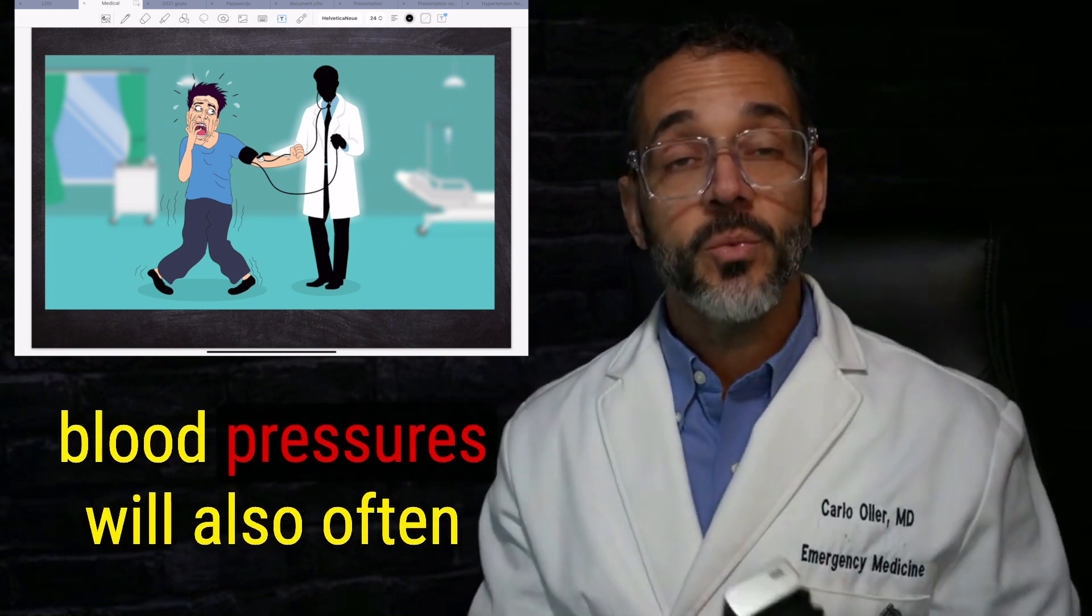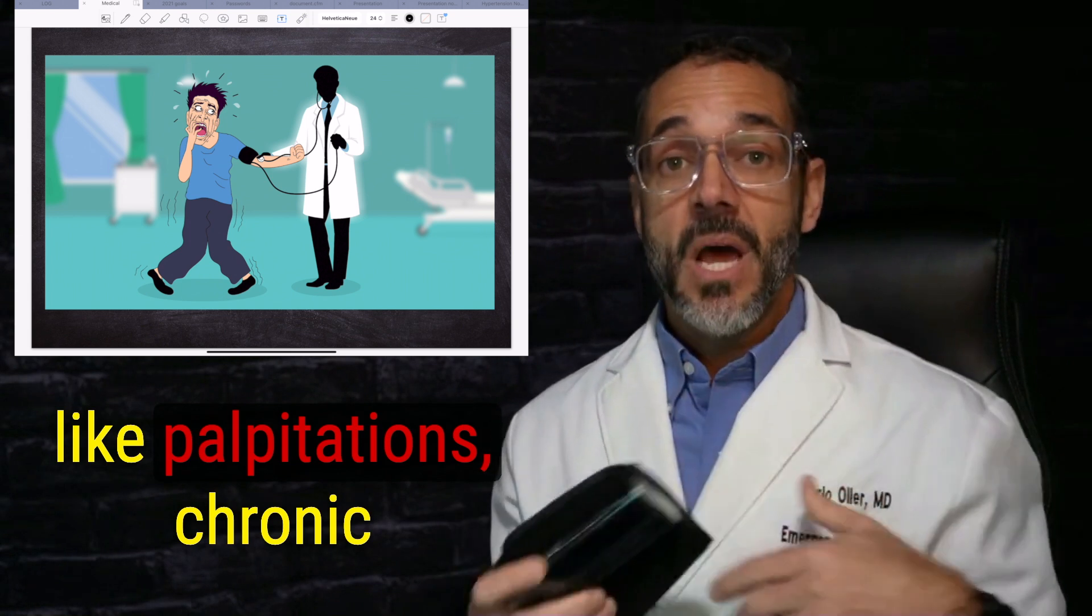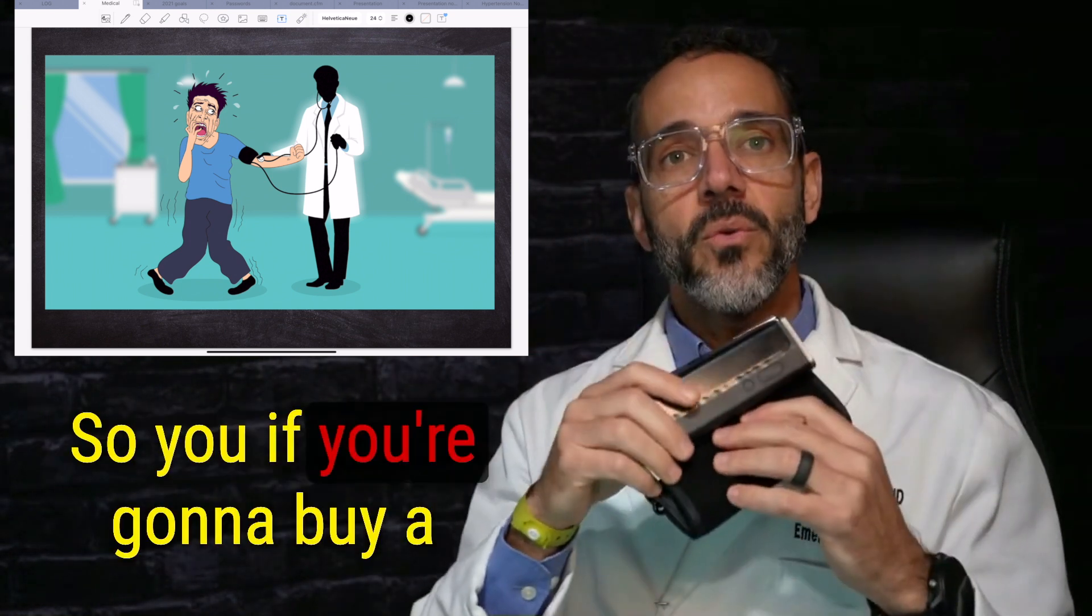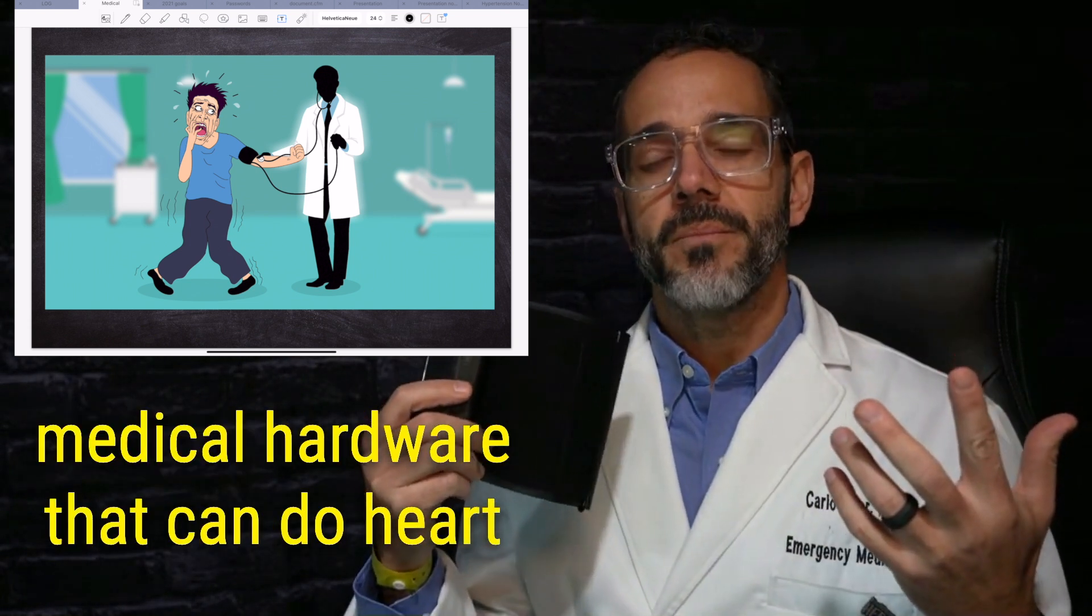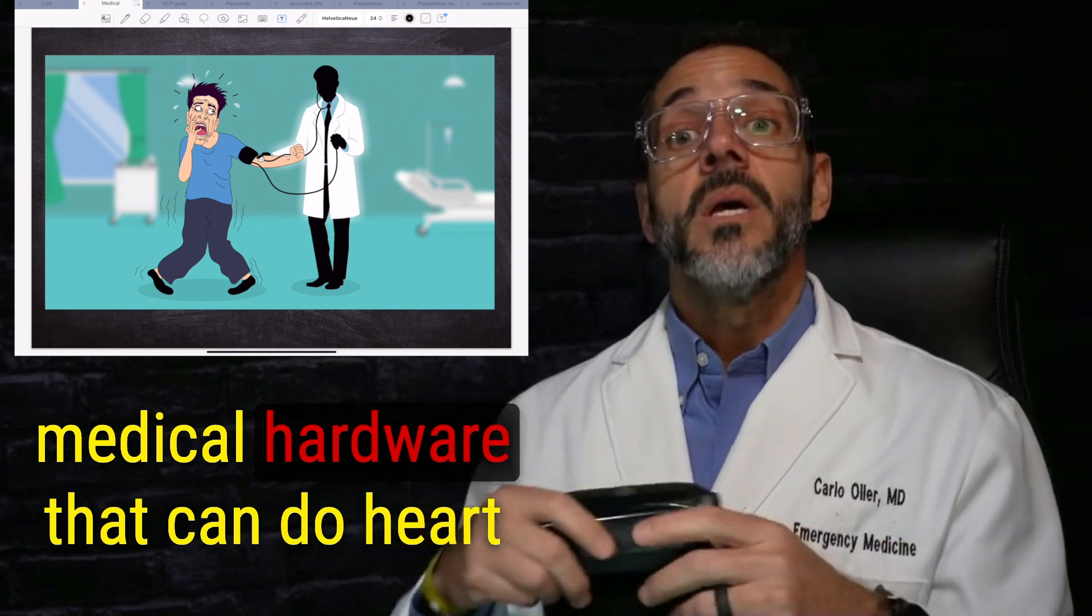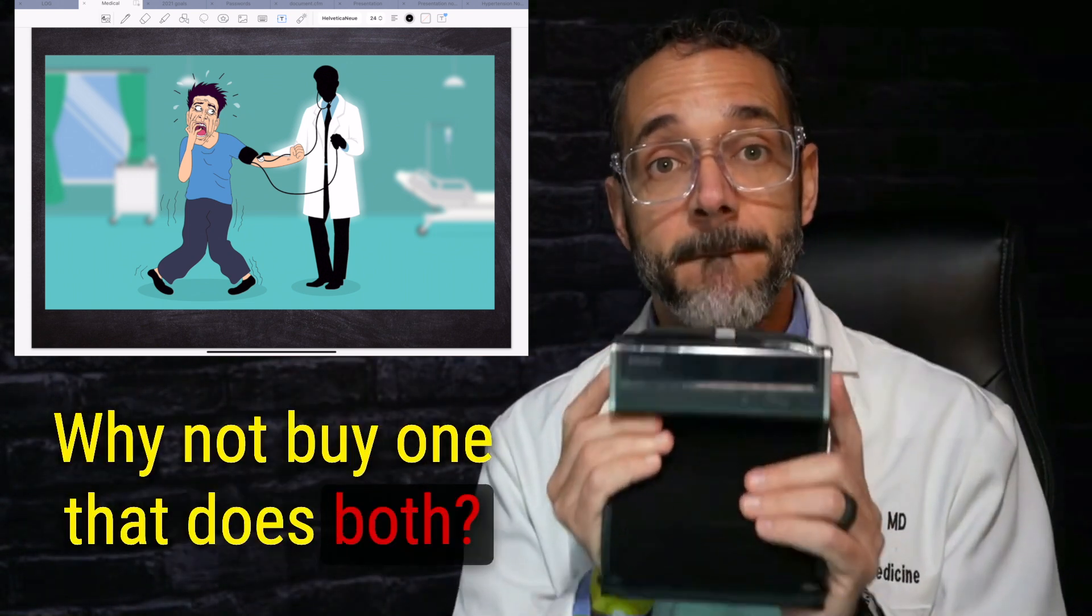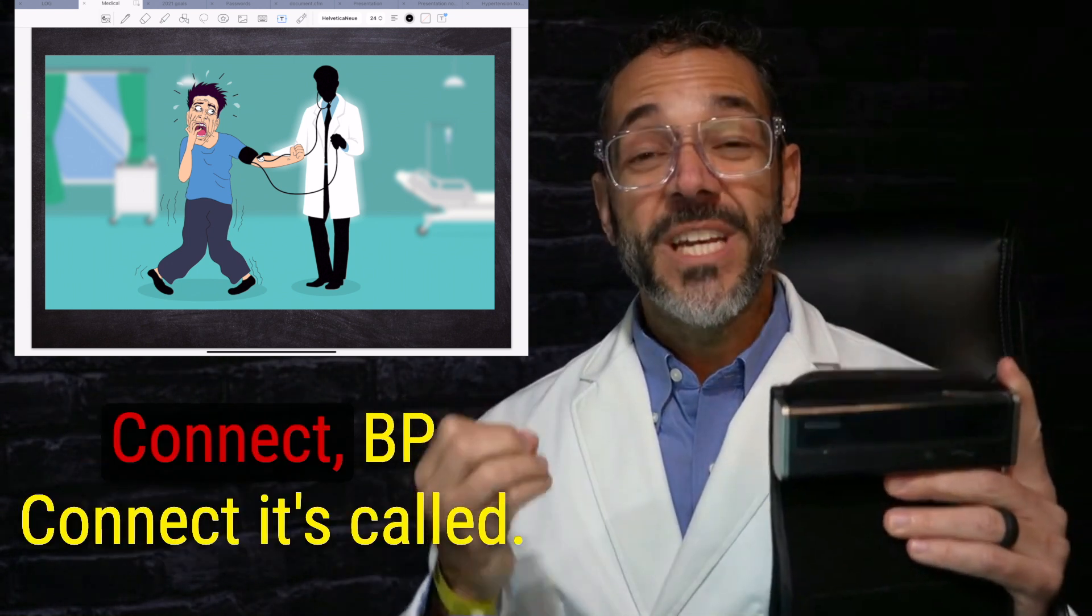So people with high blood pressures will also often have other issues with their heart, like palpitations, chronic hypertension can lead to atrial fibrillation. So if you're going to buy a medical hardware that can do heart rate monitor and blood pressure, why not buy one that does both?